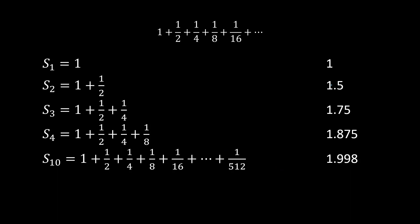Notice how we're getting closer and closer to a particular number each time, and the numbers we're adding get increasingly small. Eventually, if you keep going towards infinity, you're essentially going to be adding 0 because the number is so small. So even though we're adding an infinite amount of numbers, we can actually get an actual solution if the conditions are correct with the series.